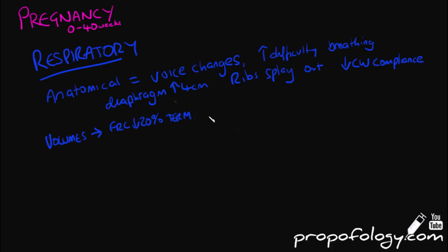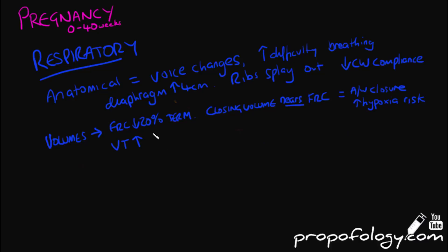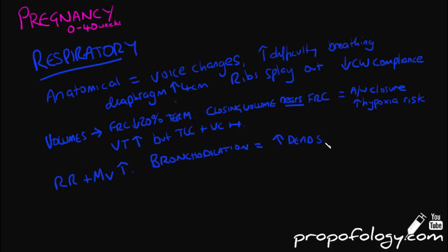This leads to airway closure in the lungs and increases the risk of hypoxia, which is made worse if you lie the patient supine — for example during a C-section — or if they are obese or have a multiple pregnancy. Tidal volumes are increased but total lung capacity and vital capacity remain the same. There's also an increase in respiratory rate and minute volume, and bronchodilation leads to an increase in dead space.